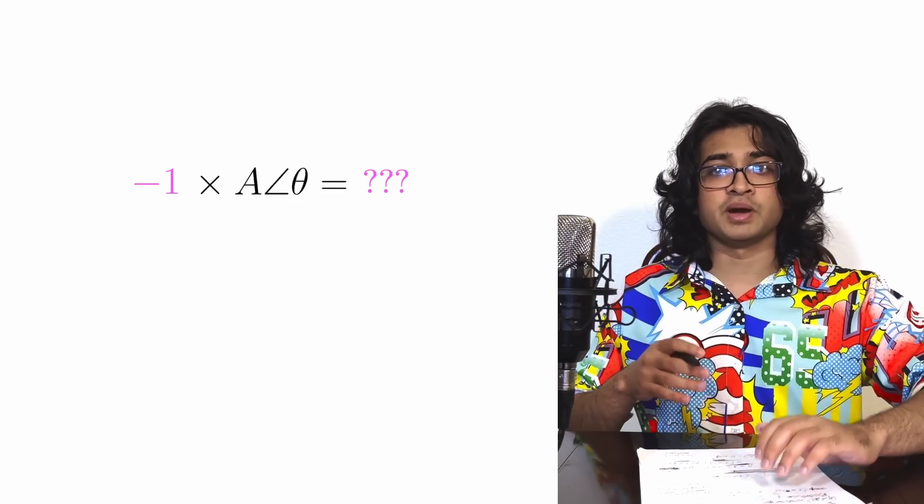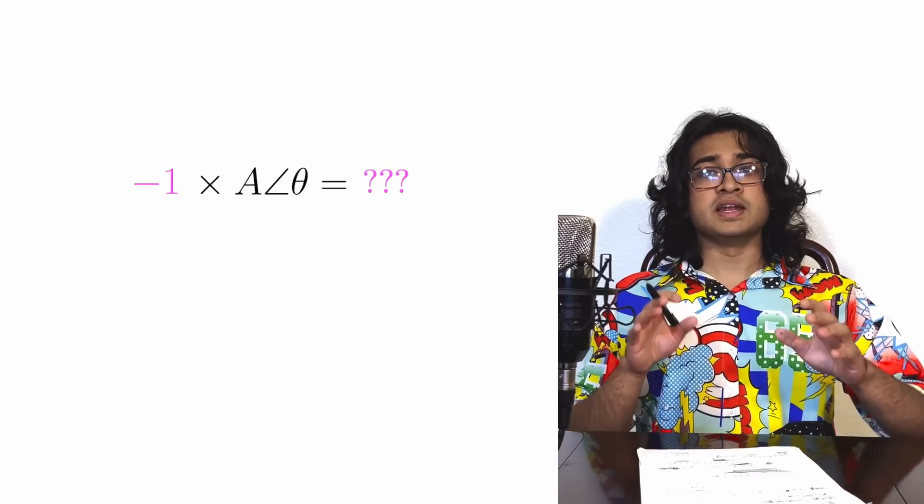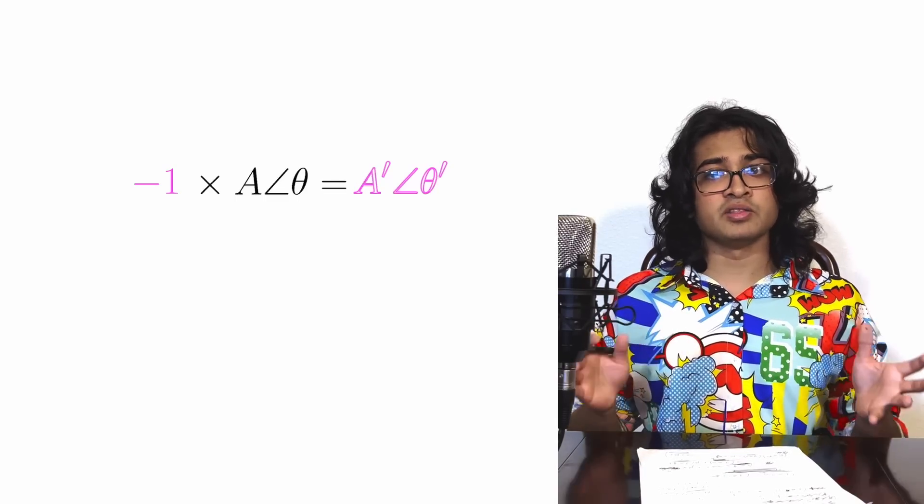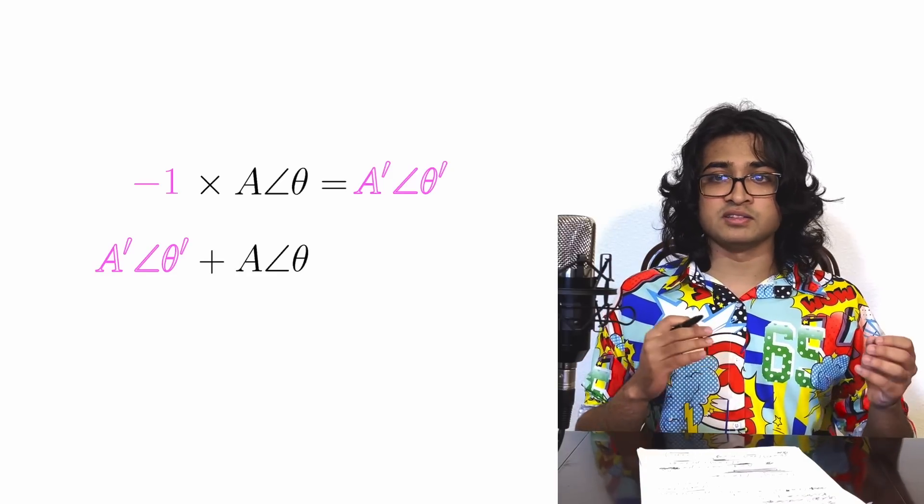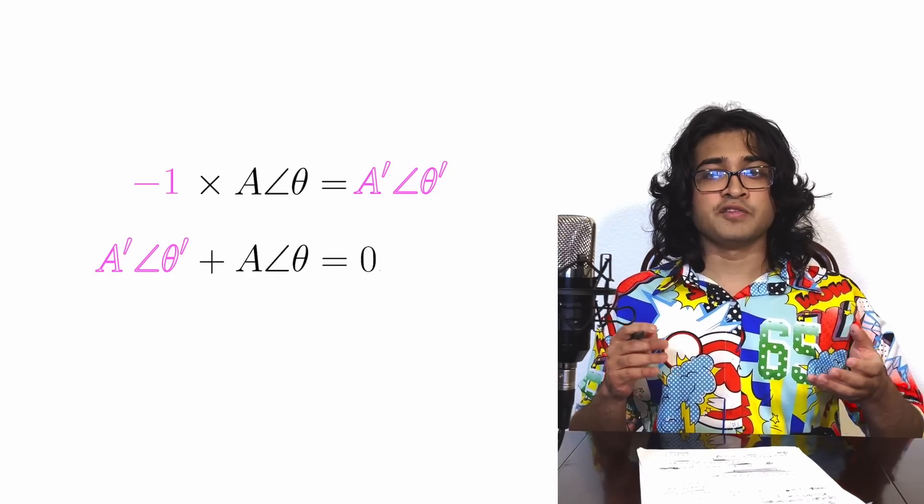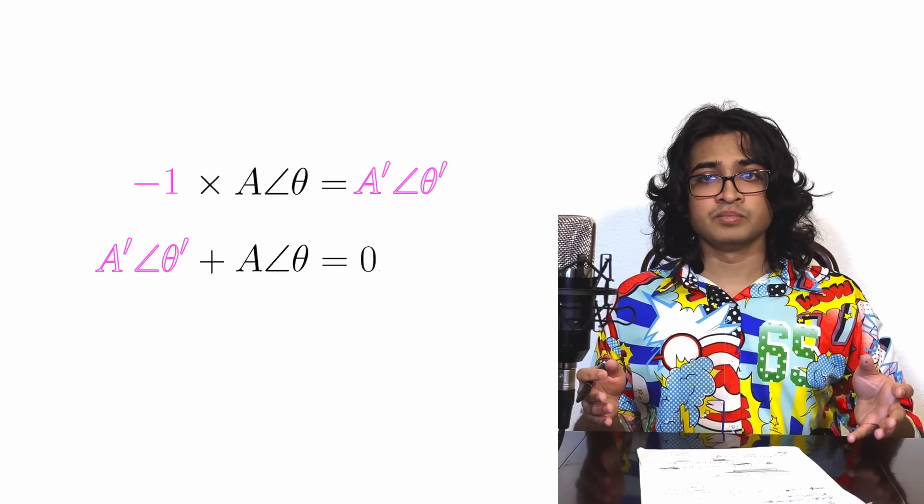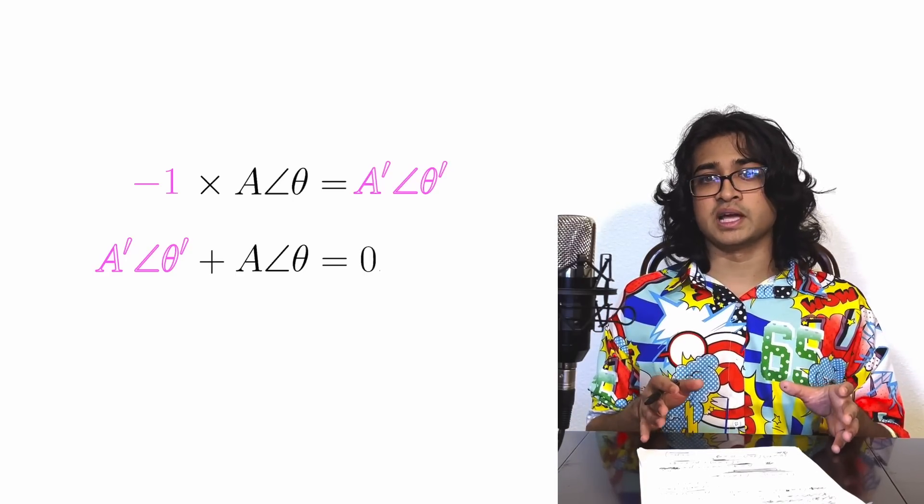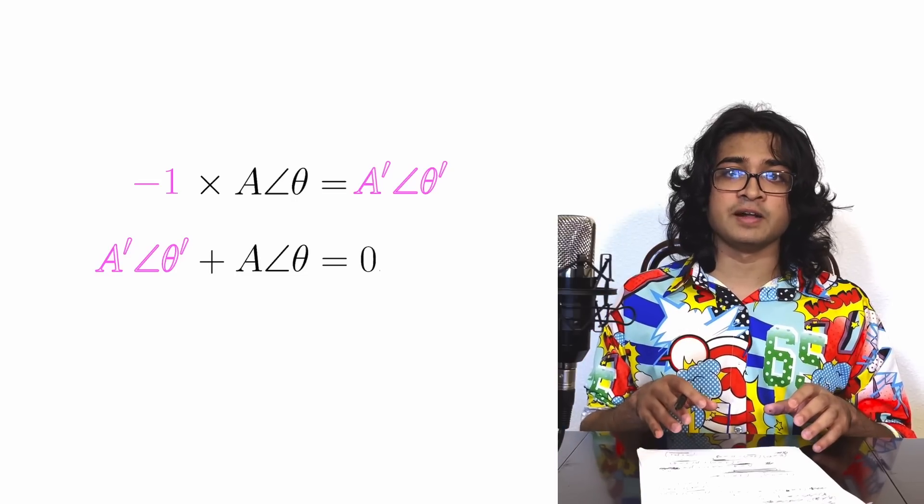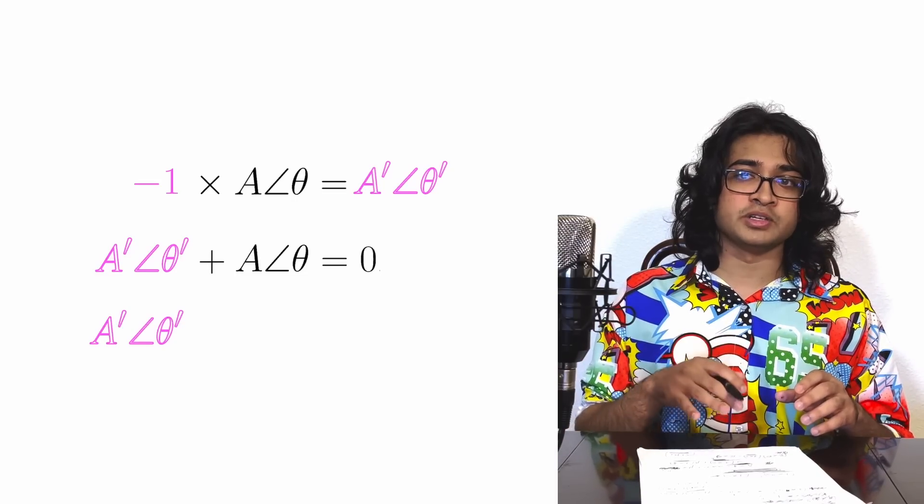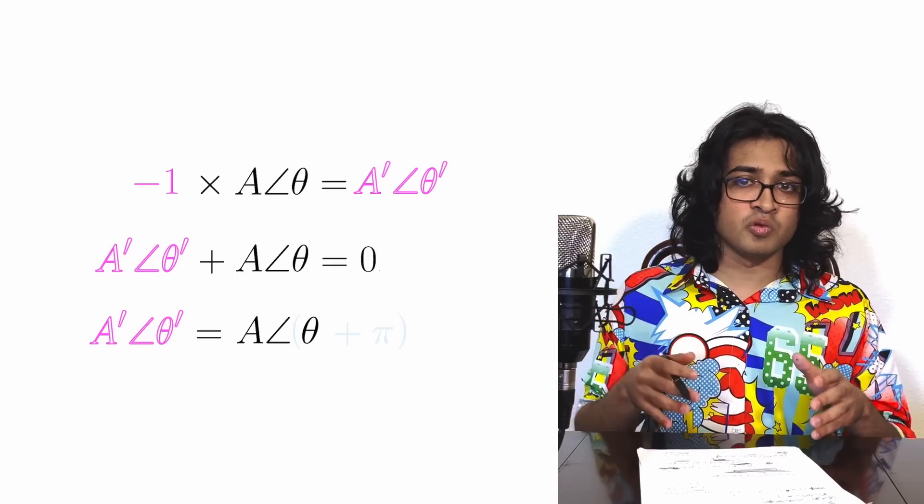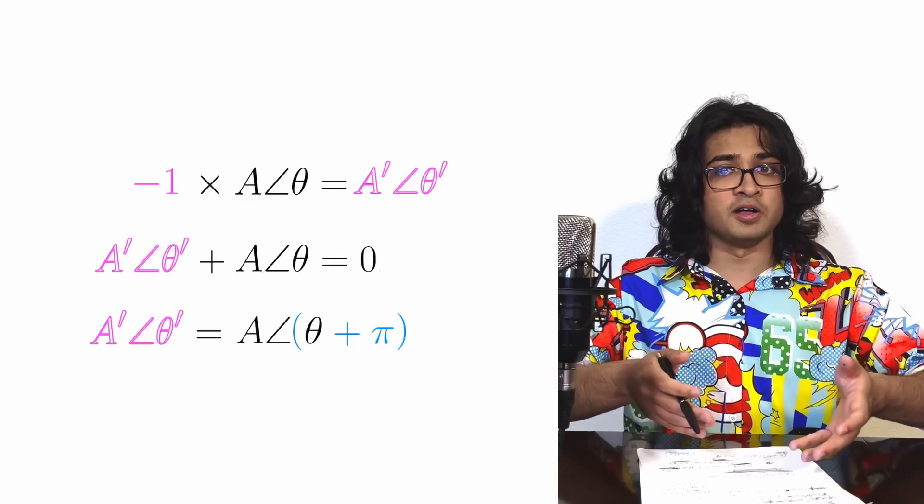Let's now make a huge leap towards discovering i by asking the question, what happens when we multiply a polar object by negative 1? The negative of any object is just another object that you can add to the first one to get zero. So if I have an arrow A angle theta, what should its negative look like? The key insight is that the negative of a polar object is itself just rotated by pi radians or 180 degrees.